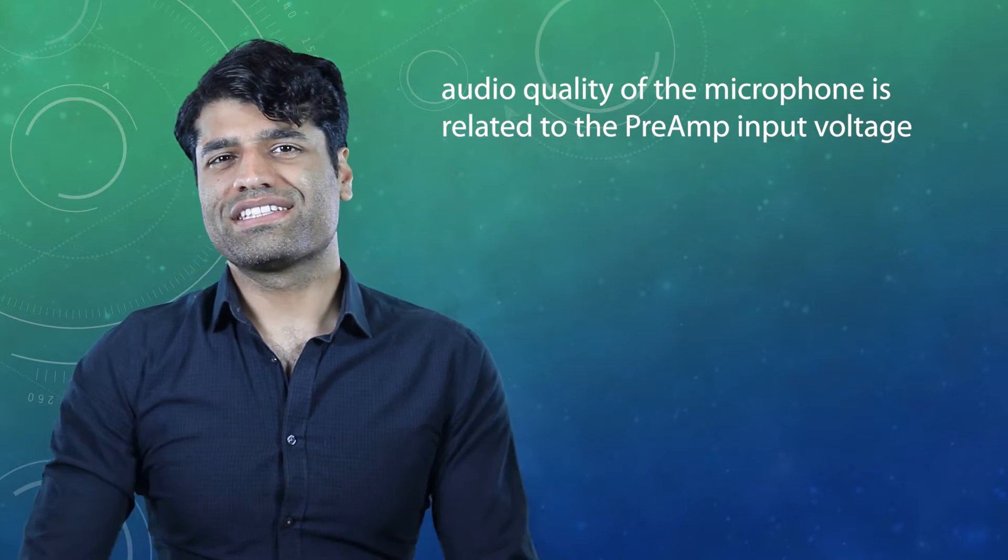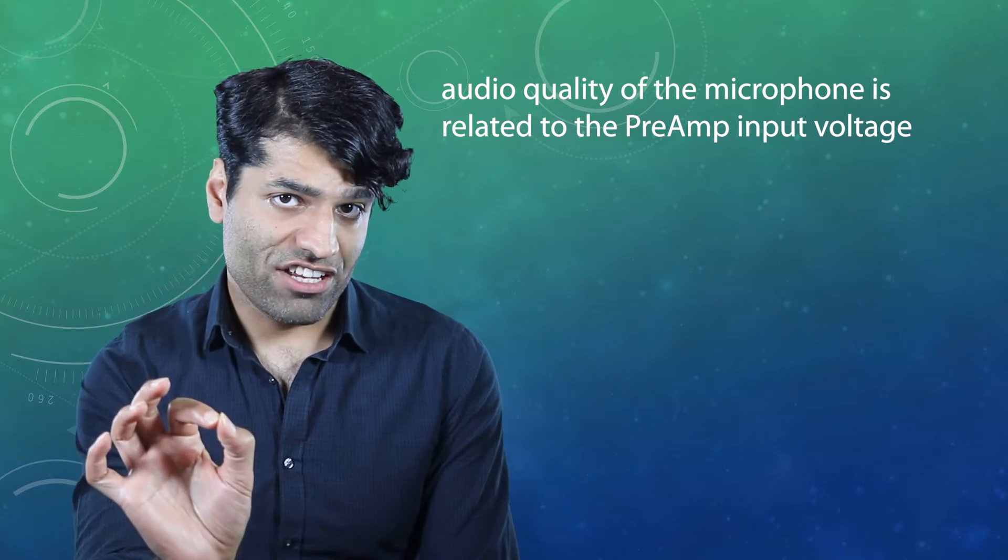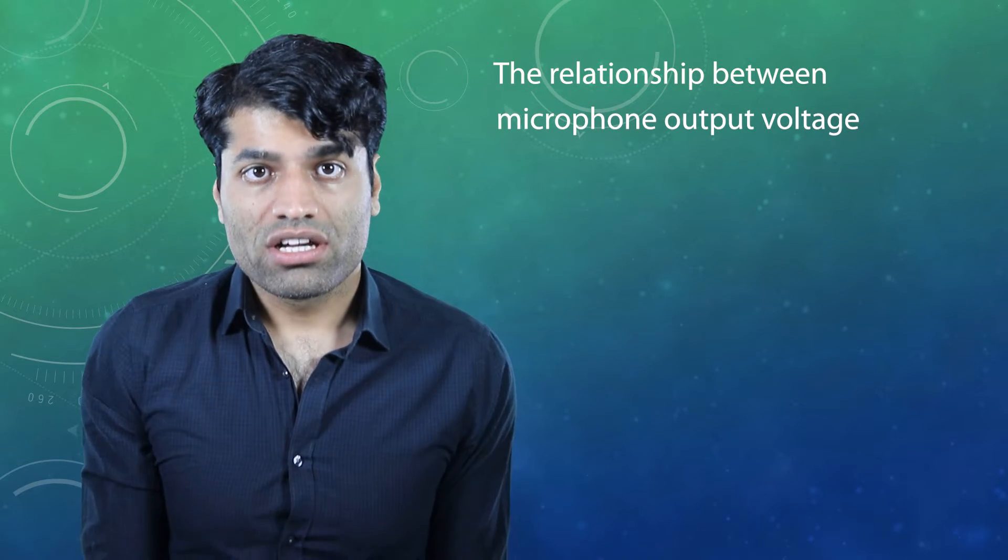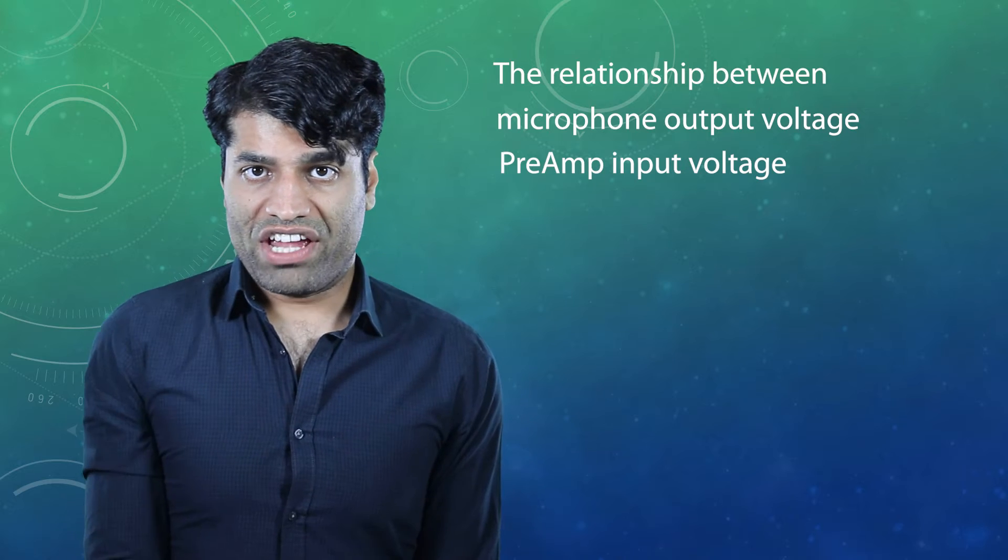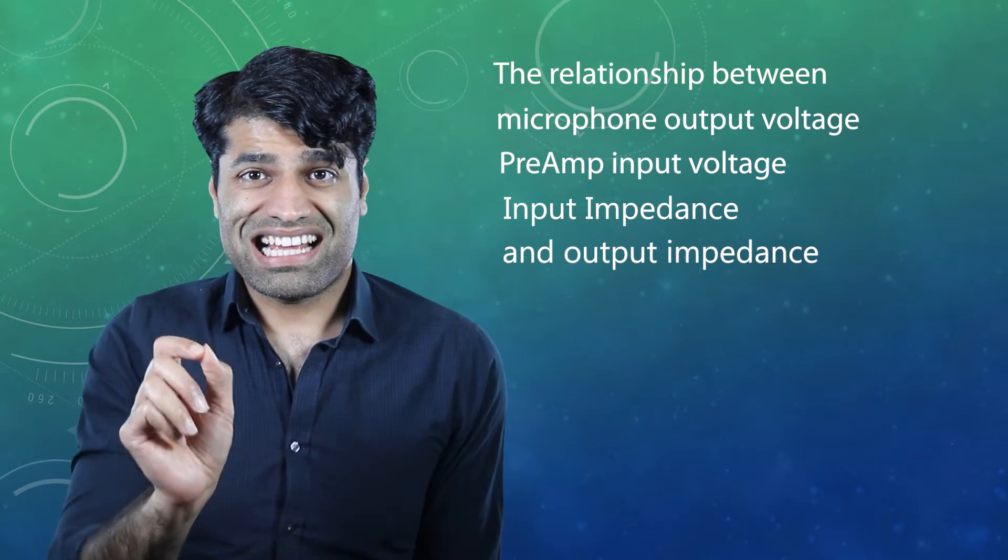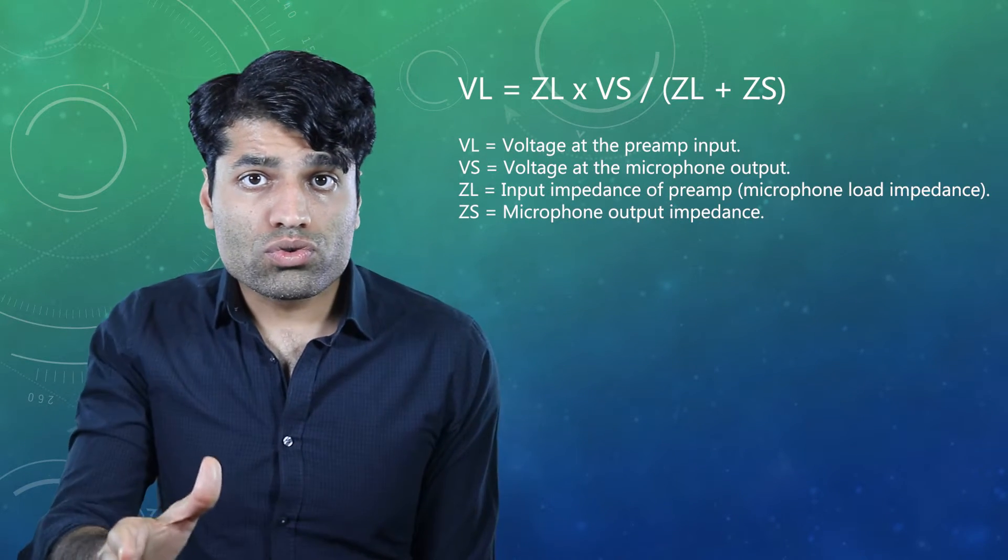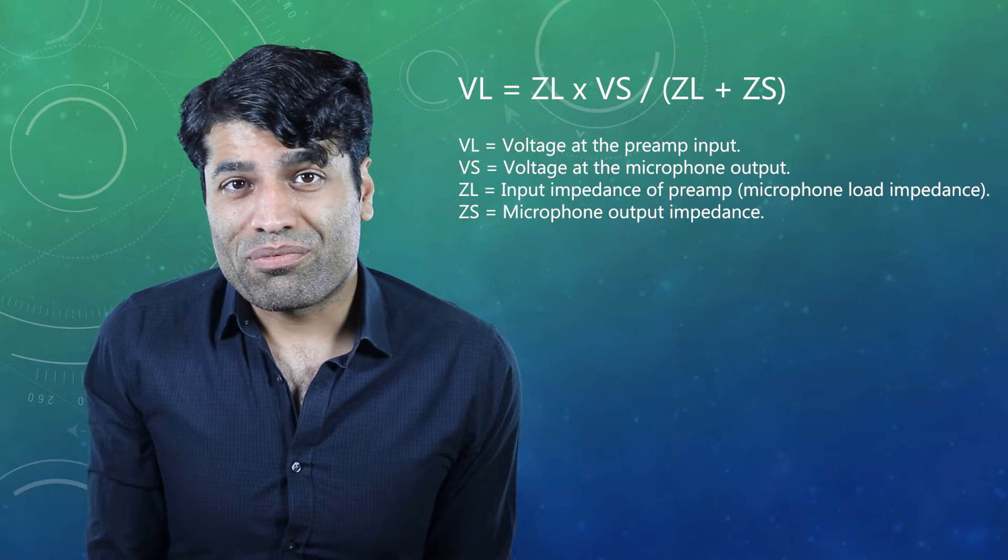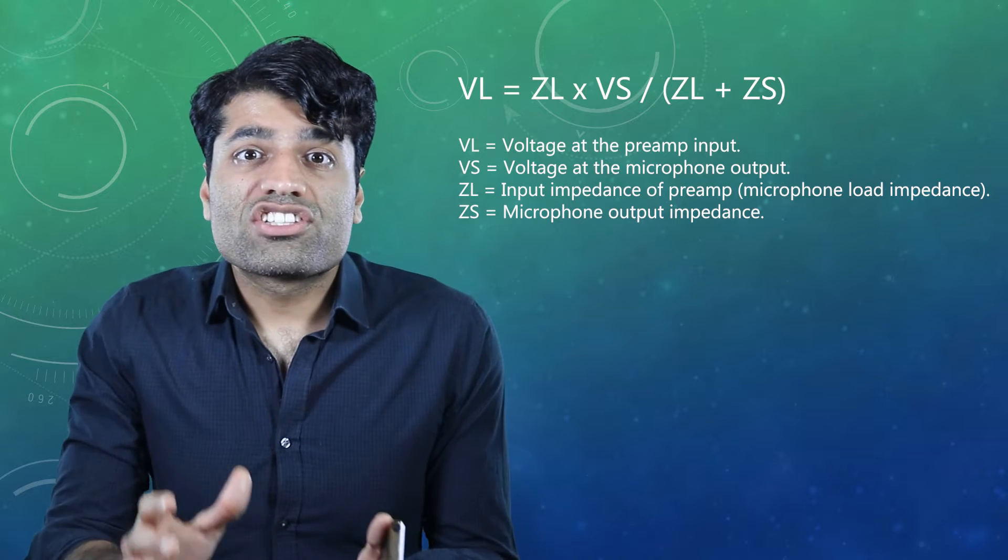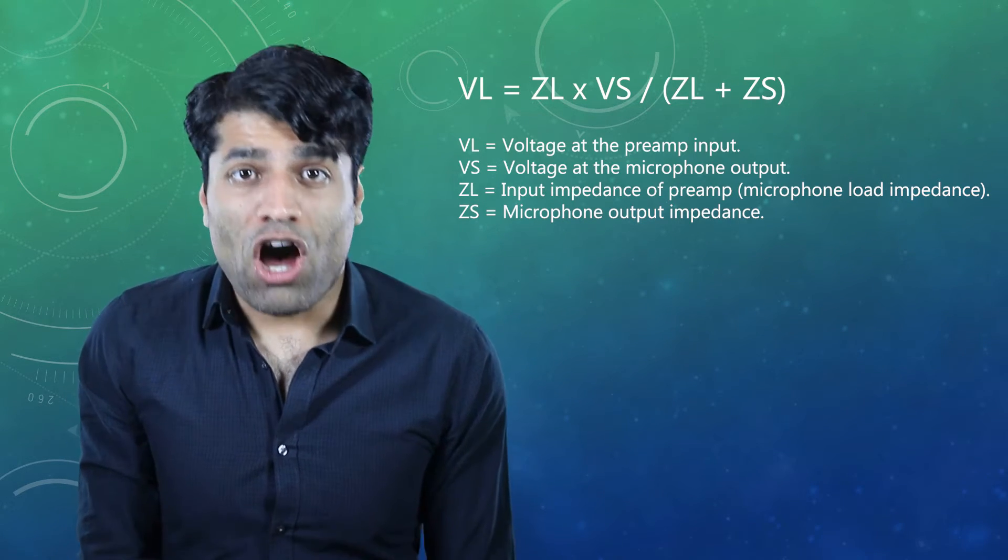The audio quality of the microphone is related to the preamp input voltage. The relationship between the microphone output voltage, preamp input voltage, input impedance, and output impedance is as follows. Voltage at the preamp input equals input impedance of preamp times voltage at the microphone output divided by the sum of input impedance of preamp and microphone output impedance.